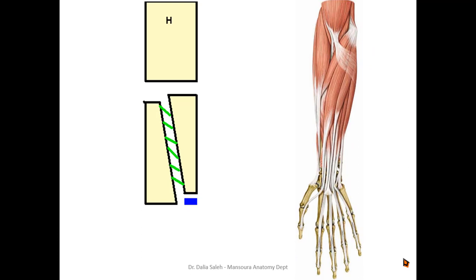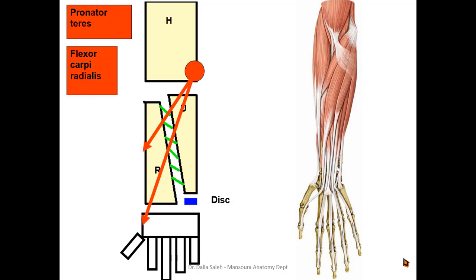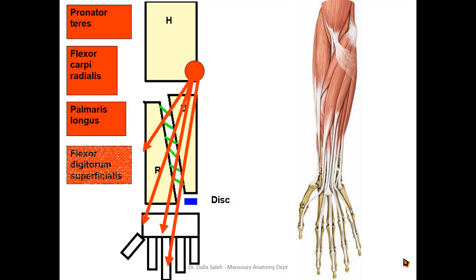They are all flexors to the joints they are crossing, like the elbow, the wrist, or the fingers, except the pronator teres, which also performs pronation of the forearm. In this diagram we can see the humerus, the ulna, the radius, the carpal bones, and the fingers. This is the articular disc between the ulna and the carpal bones. This is the medial epicondyle of the humerus, which gives the common origin of the superficial group of muscles.